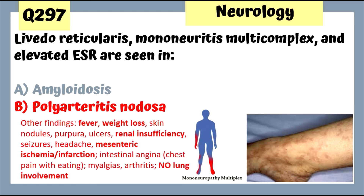Question 297: Livedo reticularis, mononeuritis multiplex, and elevated ESR are associated with polyarteritis nodosa. Other findings include fever, weight loss, and renal insufficiency. There is no lung involvement in polyarteritis nodosa, but it affects basically every other part of the body.